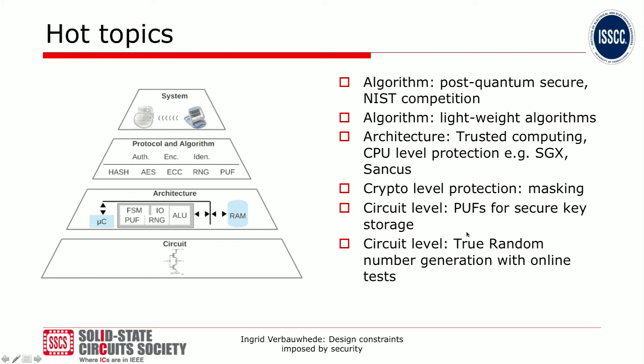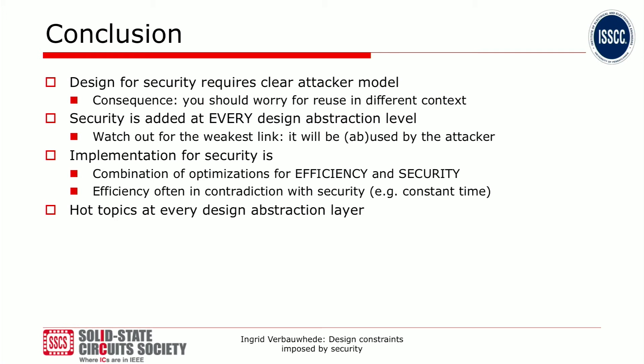In conclusion, I hope this short talk gave you some insight on how to design for security. It requires a very clear attacker model — and you should worry if your component or IP module is used in a different context, because you should redo the security evaluation at that point. Security must be added at every design abstraction level because you have to watch out for the weakest link, which will be exploited by the attacker. An implementation for security is a combination of efficiency and security, where efficiency is often in contradiction with security — for instance, we want designs to be constant time.